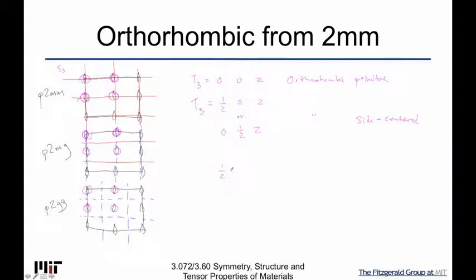Then if I choose the center, I end up, of course, with body centered. So orthorhombic means that, of course, all axes are equal to each other and 90 degrees apart.